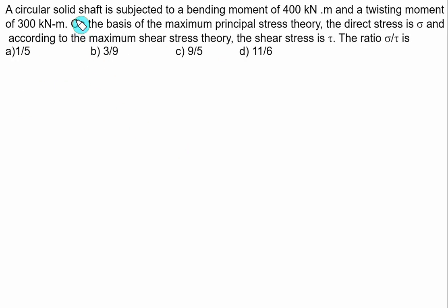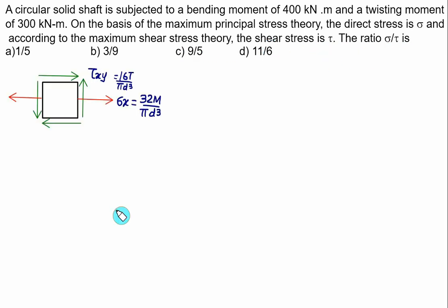A circular solid shaft is subjected to a bending moment of 400 kNm and a twisting moment of 300 kNm. Based on the maximum principal stress theory, direct stress sigma-max and based on maximum shear stress theory, tau-max are defined. If subjected to bending moment, it produces bending stress sigma-x equal to 32M divided by pi times d-cubed, and the twisting moment produces maximum shear tau-xy equal to 16T divided by pi times d-cubed.